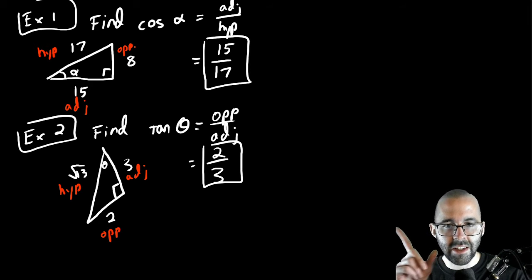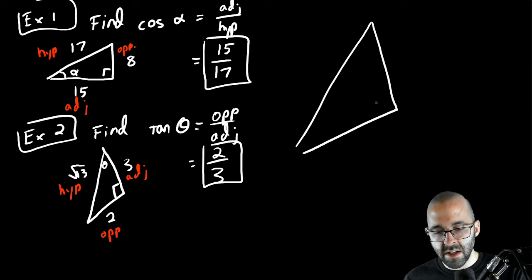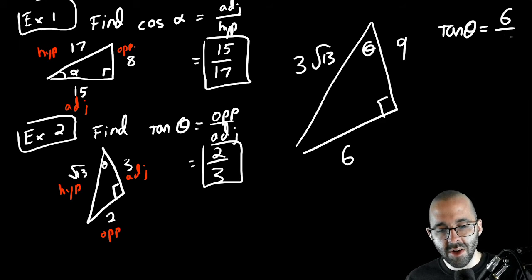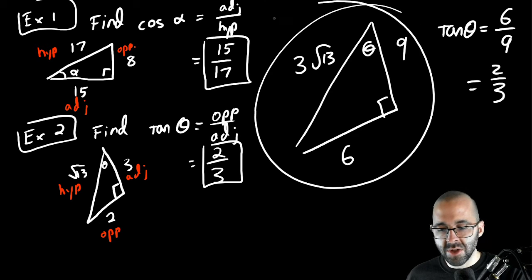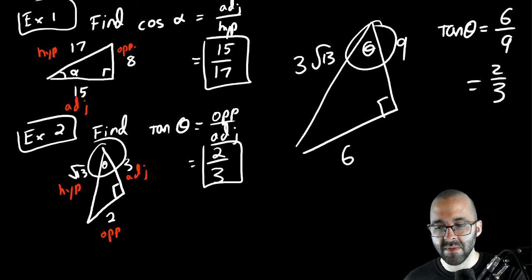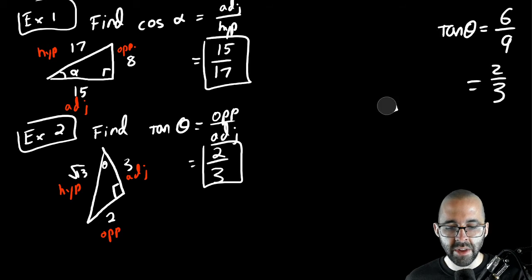Remember: these labels change if we're talking about a different angle — it's all in relation to the angle we're looking at. If we make this triangle three times as big, the tangent of theta is still opposite over adjacent, which still reduces to 2/3. That's why it's all about the ratios — even with two similar triangles, the tangent of that angle is still the same because the angle is still the same.